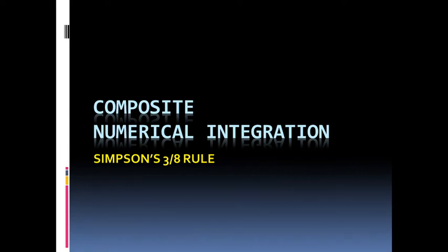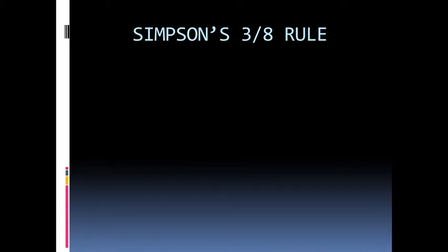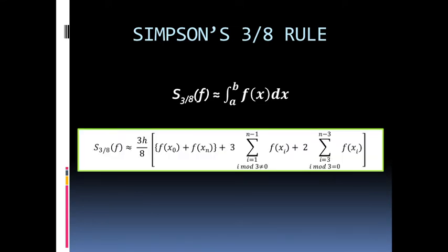Hello once again, this is for composite numerical integration topic, specifically Simpson's 3/8 rule. We will use the Simpson's 3/8 rule formula in an example. The formula is approximately equal to the integral of f(x) dx from a to b, where i equals 0 to n and h equals (b minus a) over n.